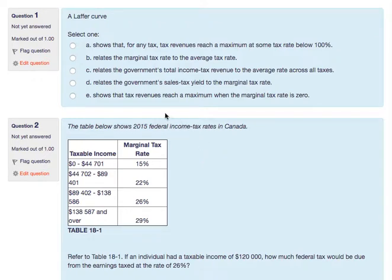So what is the Laffer curve? It's this curve that represents the relationship between the tax rate on the horizontal axis and tax revenue. If the tax rate is equal to zero, tax revenue is also going to be equal to zero.